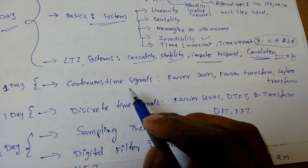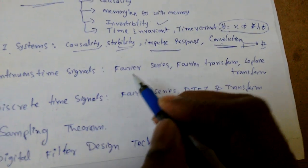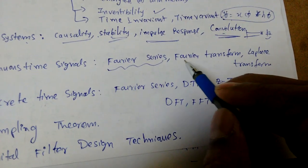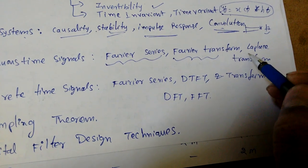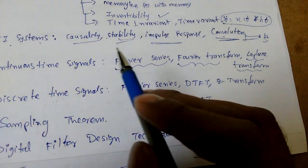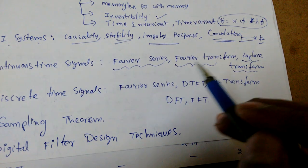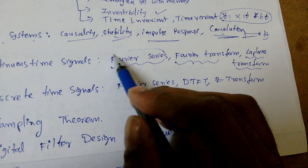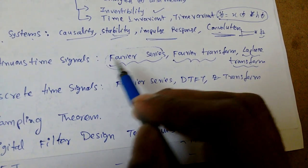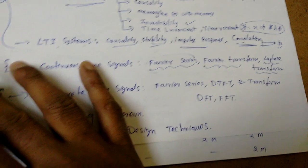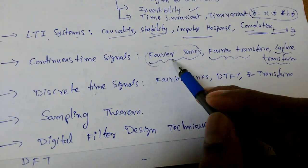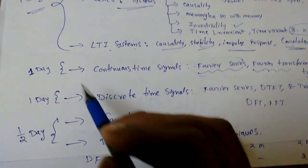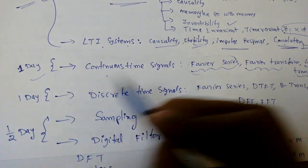For continuous-time signals we need to do analysis using different transforms. There is Fourier series, continuous-time Fourier transform, and Laplace transform. We frequently get questions from Fourier transform and Laplace transform. Fourier series questions are now rare in recent GATE papers. I will consider one day for this continuous-time signals section.